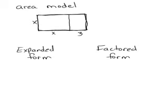Thinking about finding the area of a rectangle helps us think about these two different forms. We know that when you find the area of a rectangle you multiply the length times the width. So in this case the length is x and the width is x plus three.